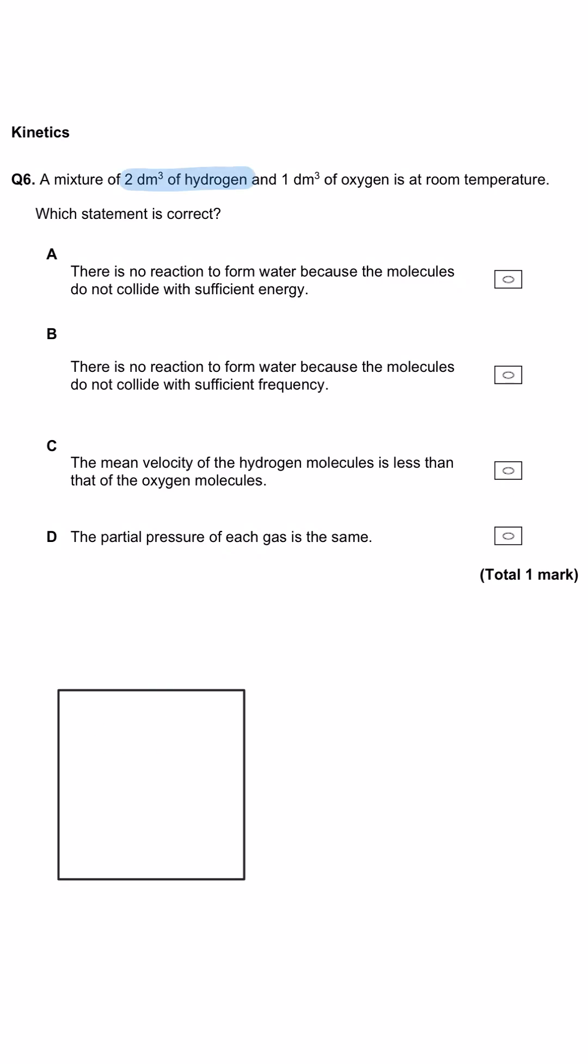A mixture of 2 dm³ of hydrogen and 1 dm³ of oxygen is at room temperature. Which statement is correct?